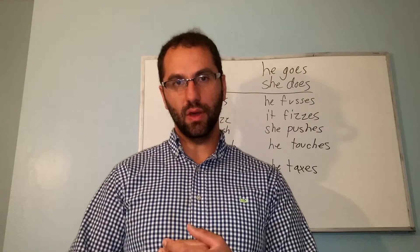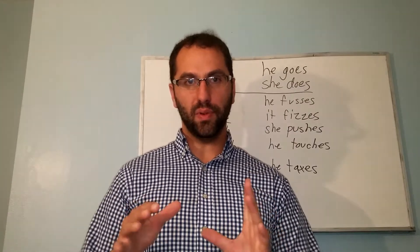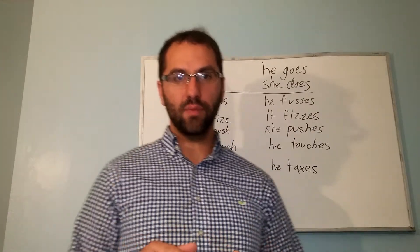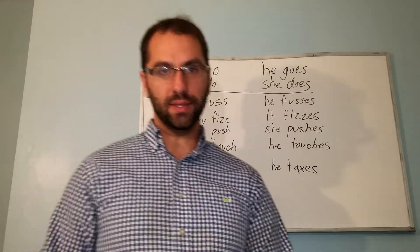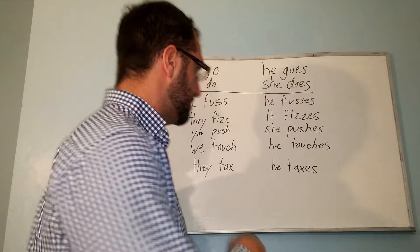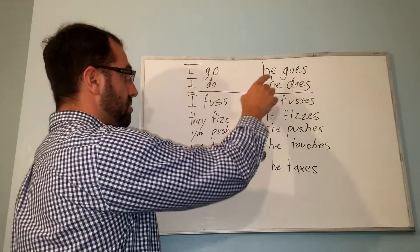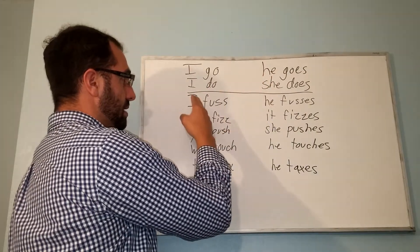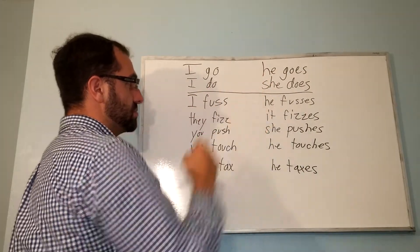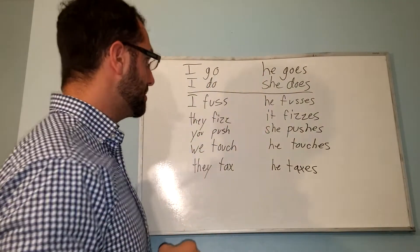If the verb ends in O, the third person singular form ends in OES. For instance, I go becomes he goes, and I do becomes she does.